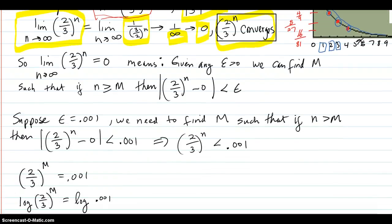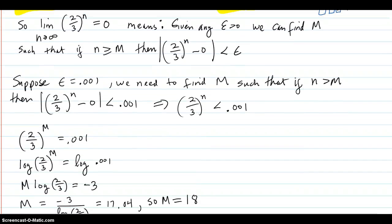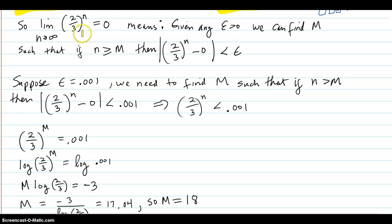Now, technically speaking, when we say the limit of 2 thirds to the n equals 0, what it really means is that given any small epsilon but greater than 0, we can find an M such that if your n counter is beyond the M or equal to the M, then your 2 thirds to the n will be epsilon close to the limit, which happens to be 0. Very similar to the epsilon delta definition of limit.